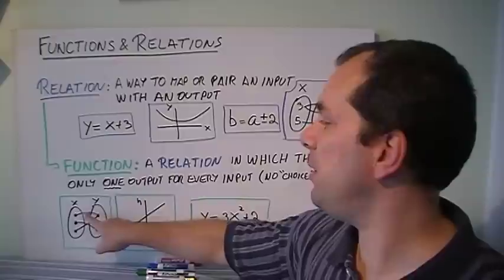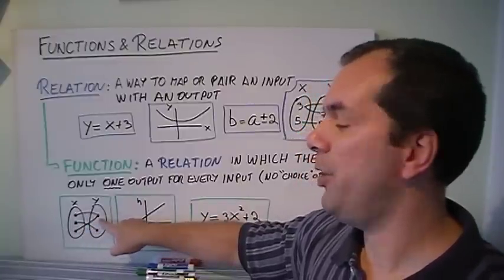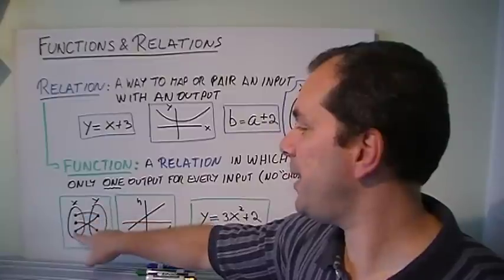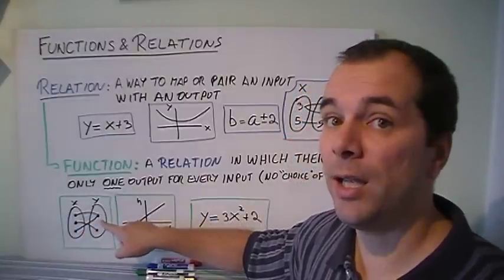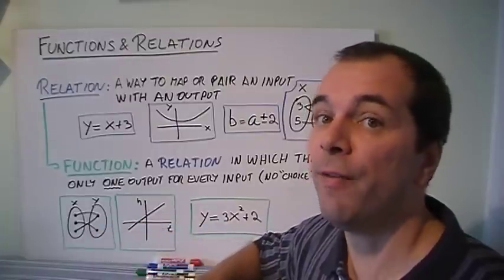This one, as you can see, every input has only one output. Now notice that this output gets repeated twice. This input and that input gave me the same one. That's okay. As long as the input has only one choice of an output, we're good. That's a function.